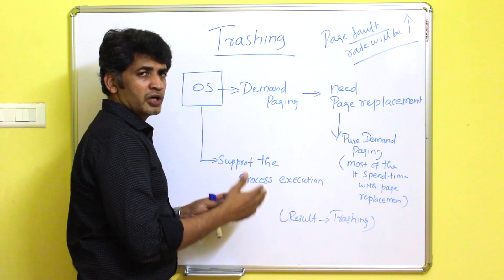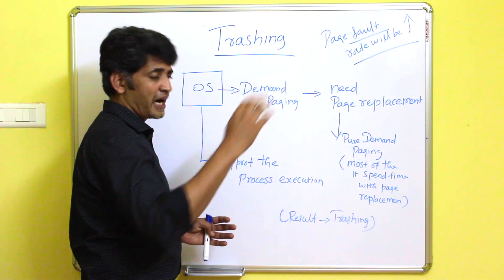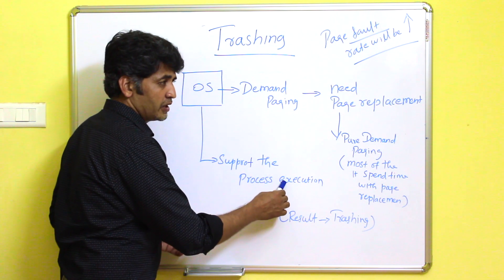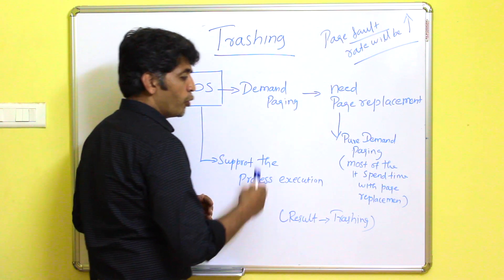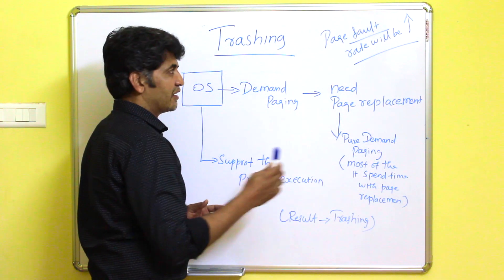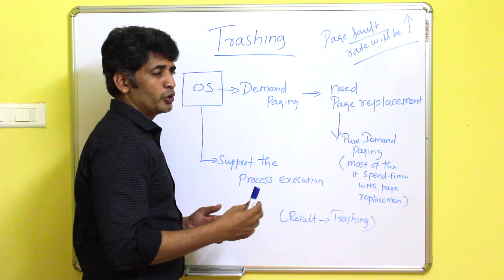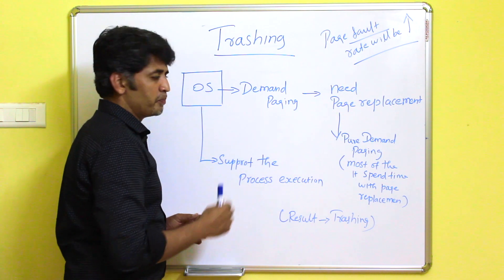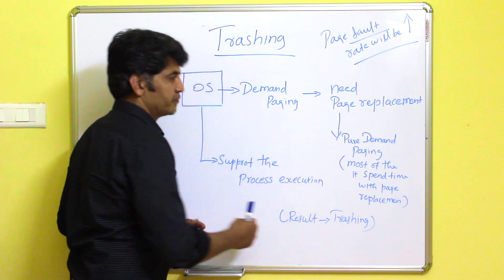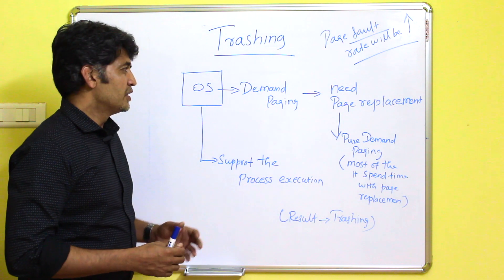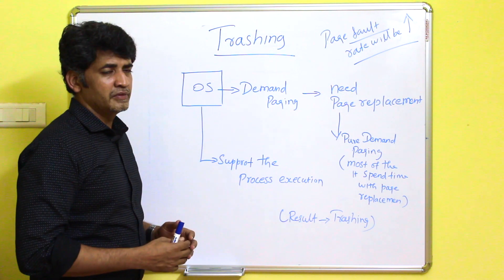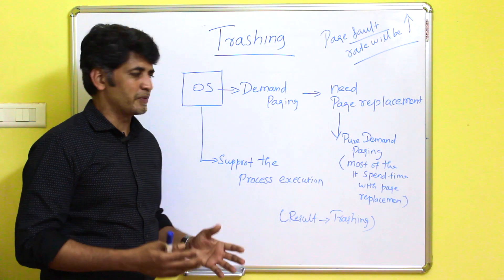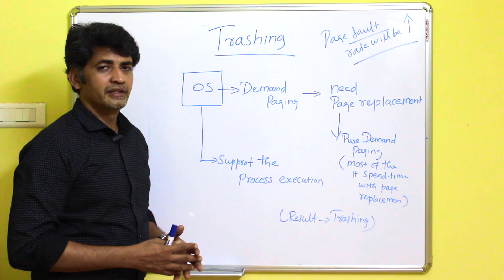CPU utilization goes down and the page fault rate will be higher. Instead of process execution, if the CPU spends more time with page replacement, it leads to wastage of CPU time. This particular problem is called thrashing — when the processor spends most of its time on page replacement instead of process execution, it ends up with thrashing.